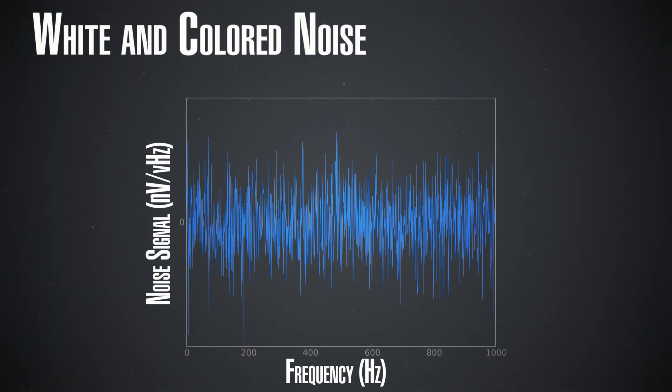What we mean by white noise is noise whose density does not depend on the frequency. For example, the thermal noise is white. It is the same at kilohertz, megahertz, gigahertz, etc. It does not depend on the frequency itself, only on the temperature.